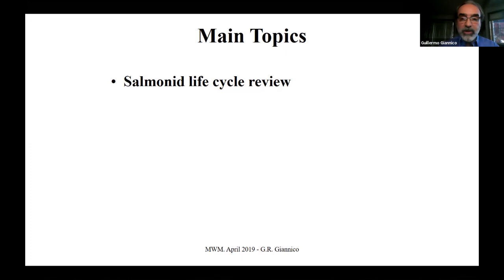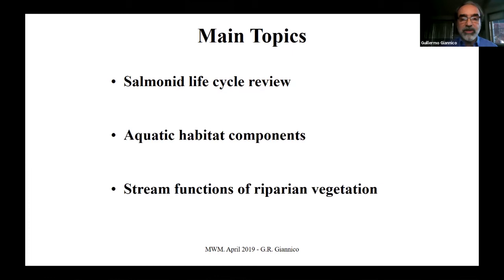The presenter begins, noting the audience may be familiar with the salmonid lifecycle but hoping to add significant information. The presentation will cover the lifecycle, then focus on aquatic habitat components and how to evaluate the elements that make up fish habitat. It will then relate riparian vegetation to fish habitat — though it may not seem obvious, the riparian corridor is part of fish habitat, making contributions to fish and aquatic creatures even when not underwater.